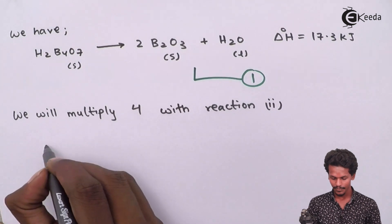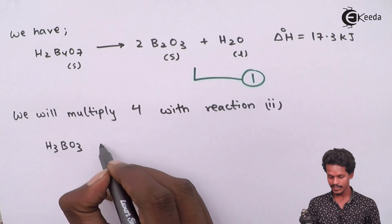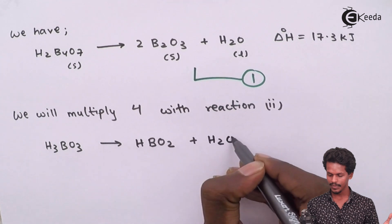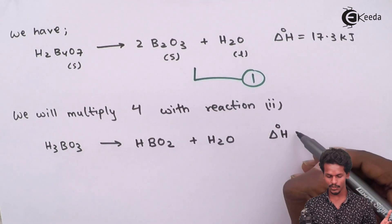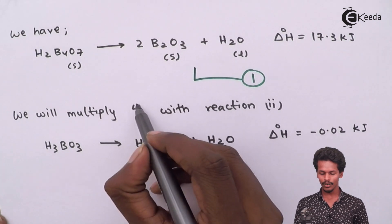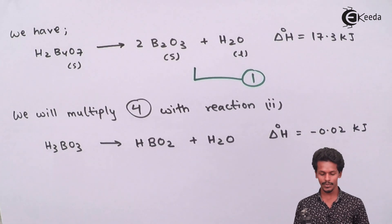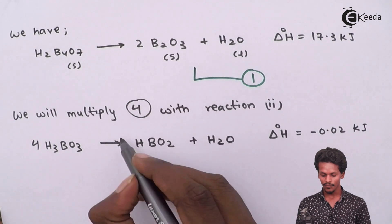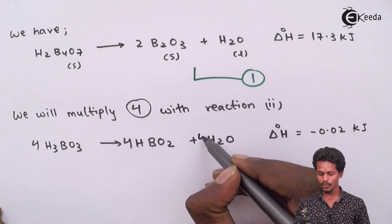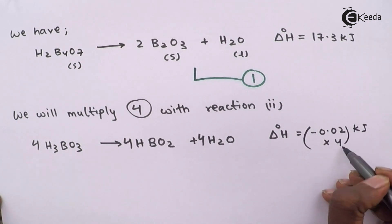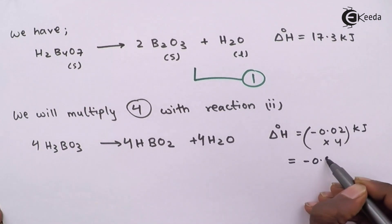Multiplying reference reaction 2 by four gives us: 4H₃BO₃ → 4HBO₂ + 4H₂O. The original ΔH was −0.02 kJ, and multiplying by four gives ΔH = −0.08 kJ. This becomes our Equation 2.